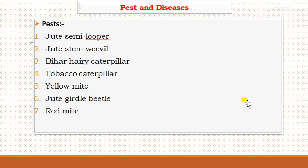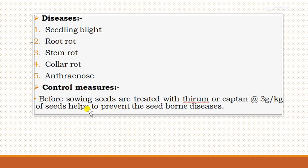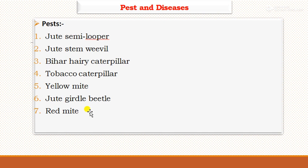There are a number of pests in jute, including jute semi-looper, jute stem weevil, Bihar hairy caterpillar, tobacco caterpillar, yellow mite, jute girdle beetle, and red mite. These pests can be controlled by spraying carbaryl, or dust application or spraying of malathion at the rate of 1 litre per 1000 litres of water. Also spray the crop with quinalphos at the rate of 1 litre per 1000 litres of water. Installing yellow sticky traps and pheromone traps — integrated pest management practices — should be followed for pest control.